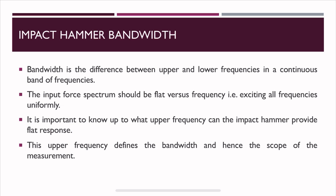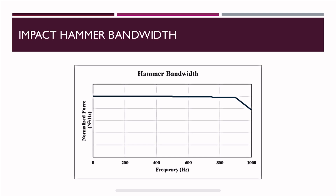Bandwidth is the difference between upper and lower frequencies. The input force spectrum should be flat versus frequency, meaning it should excite all frequencies uniformly. The upper limit depends on the impact hammer tip used — silicone tip, rubber tip, or metal tip each have different upper frequency limits. For example, a hammer may have a bandwidth up to 900 Hz, meaning it can provide a flat frequency response only up to that limit. It's important to know the usable bandwidth before performing measurements.